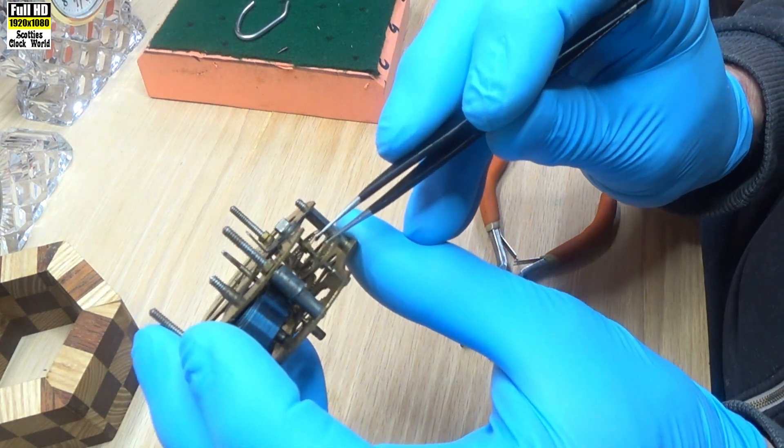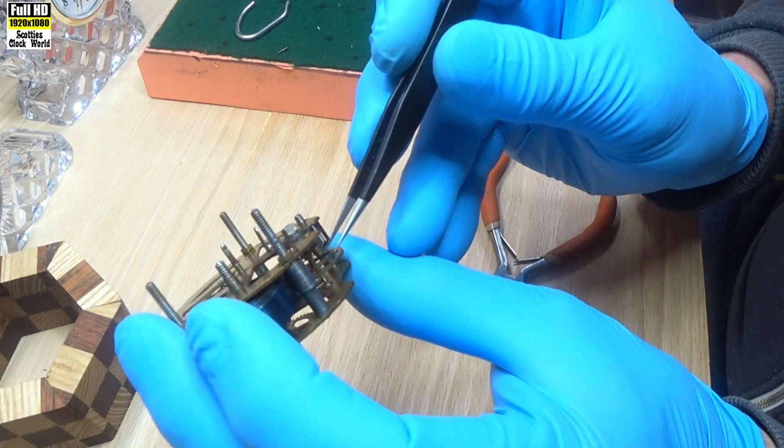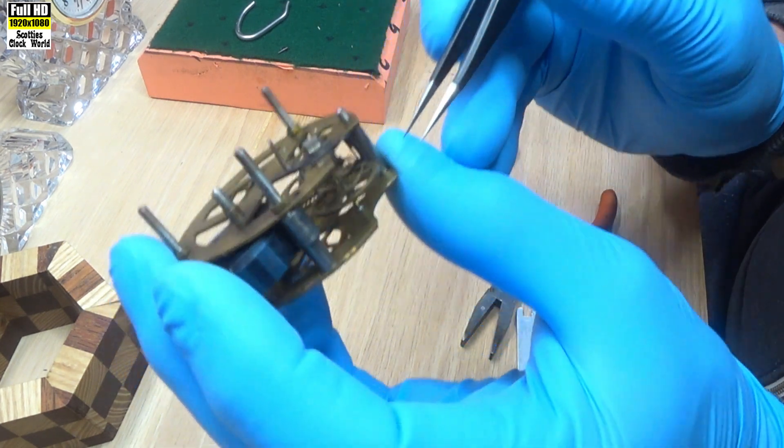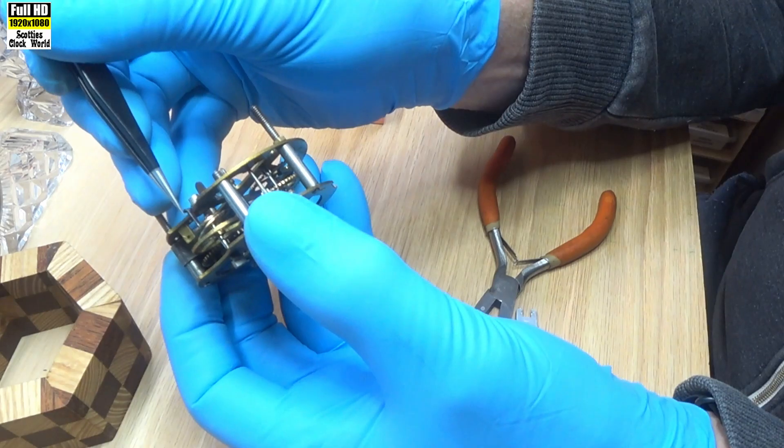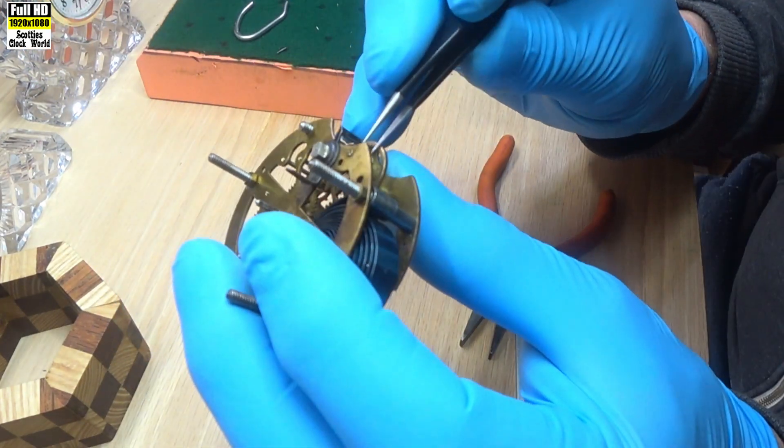Now we take this end piece of the hairspring, and we've got to put the end in through that, the slot in there. I'll use a pair of tweezers for that so I can get the end of it.